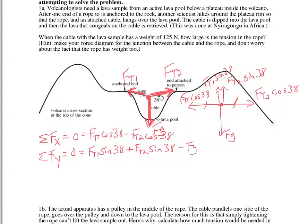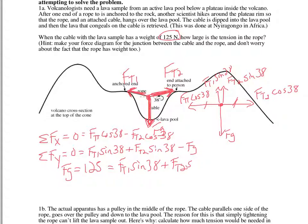If you can get to these equations, you're in good shape — the next part is just solving it. The only direction I have enough to solve is the y direction, because in the x direction I've got two unknowns: I don't know Ft1 or Ft2. But in the y direction, I know Fg, and I know that Ft1 and Ft2 have to equal each other. So Fg, which is 125 newtons, is equal to Ft1 sine 38 plus Ft2 sine 38.